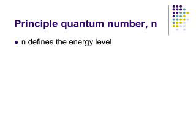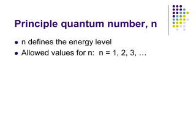We're going to start by talking about the first quantum number, or the principal quantum number, given the letter n. Now n defines the energy level of the orbitals — the regions where electrons are likely to be found. There are only certain values of n that are allowed; that's why these are called quantum numbers. Only certain energies, only certain values are allowed. The allowed values for n are the integers starting at 1, going to 2, 3, and so on, in theory all the way up through infinity. Practically speaking, n ends up being 7 as the highest normally occupied energy level for a ground state atom, but other values are possible.